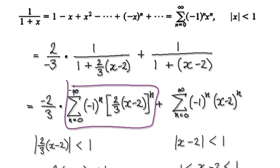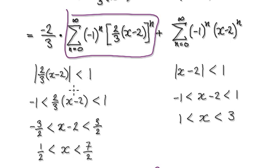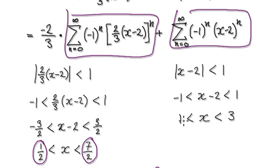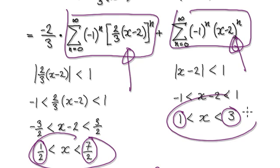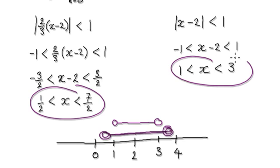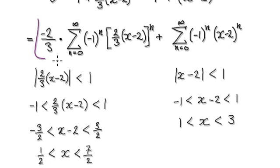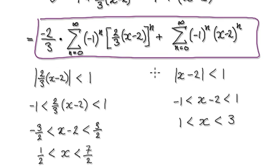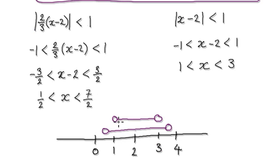So now this series is only valid for x being in between a half and 7 over 2. And then for this series, it's valid for x being in between 1 and 3. So this series is valid for this, and this series here is valid for this. So this thing here is from a half to 3 and a half, and then this thing here would be from 1 to 3. Our whole series is a combination of the two, so you've got to use from 1 to 3.